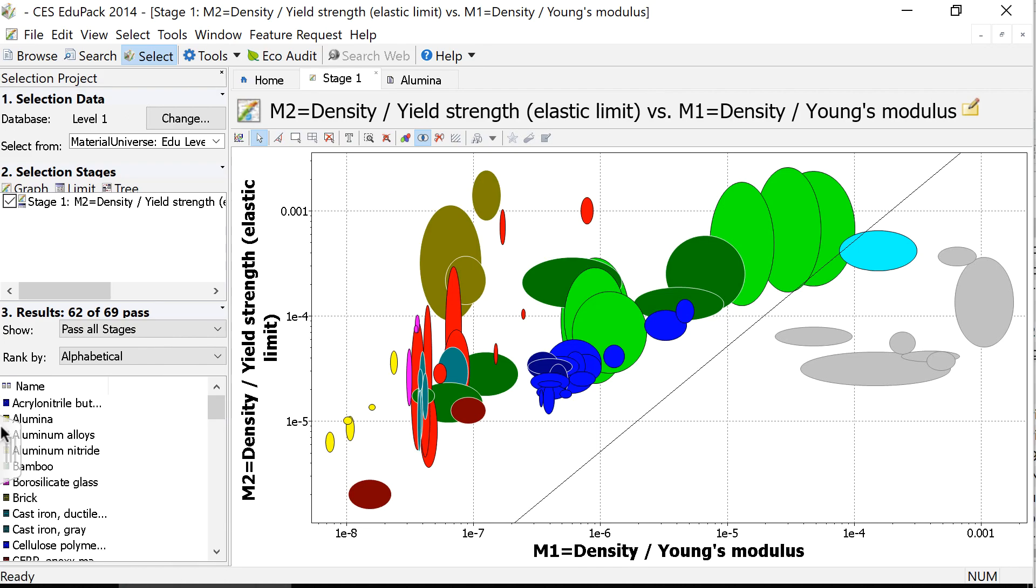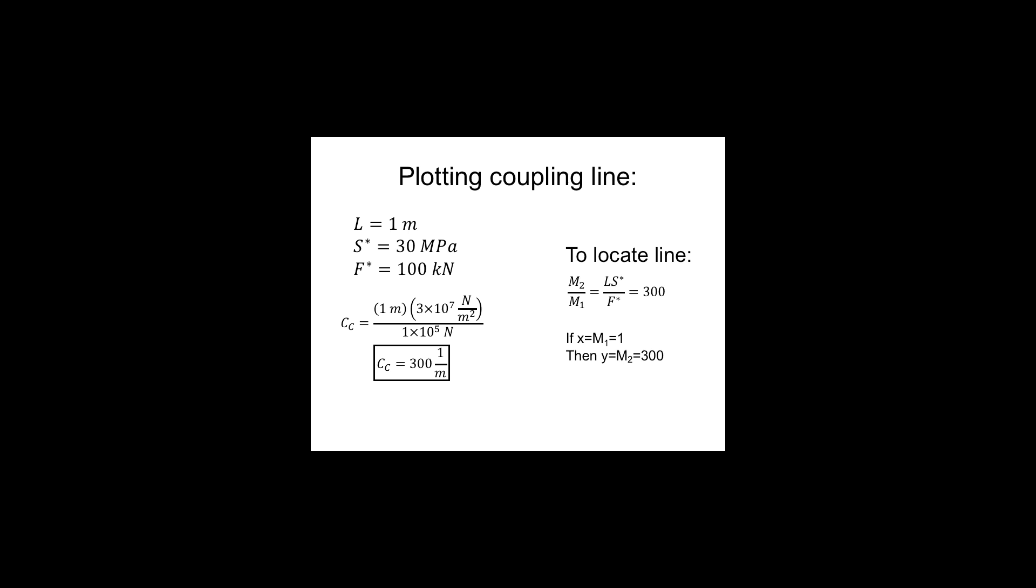So to determine that location, I go back to my PowerPoint to my notes, and our coupling constant we found was 300, 1 over meters. So now if I need to locate that line, I can rearrange my material index, my coupling constant equation.